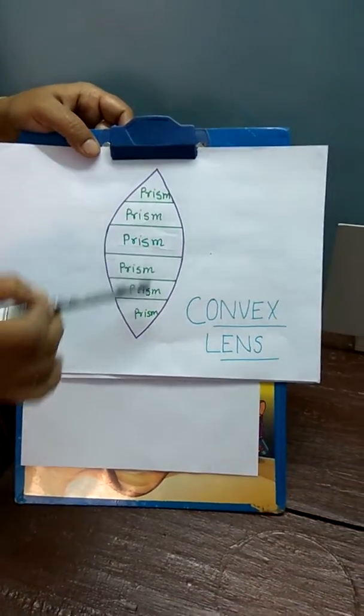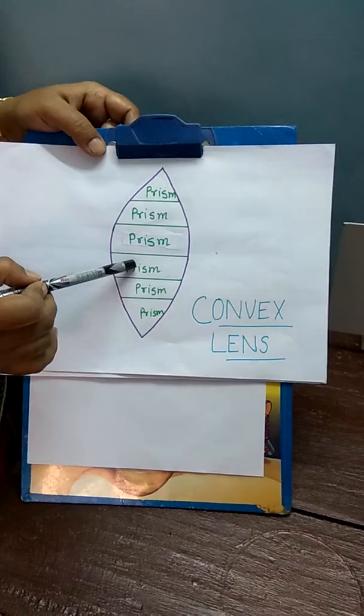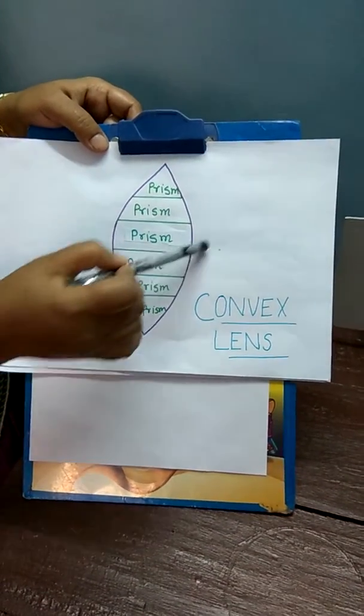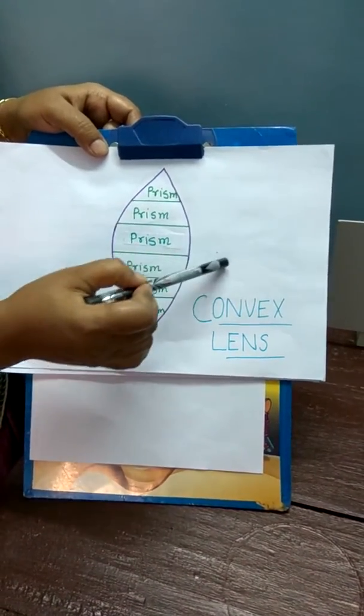So the same thing happens in the convex lens. The rays of light are entering and they are bending towards its base and converge at a point.